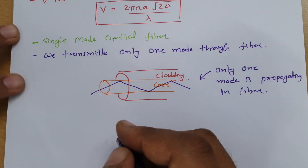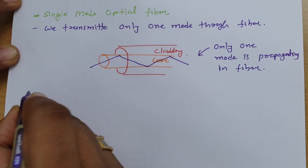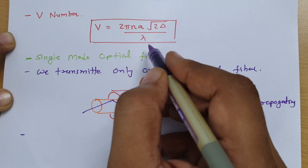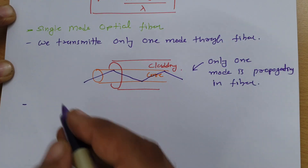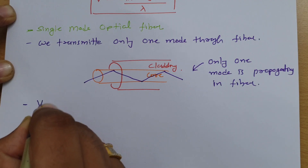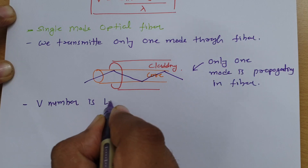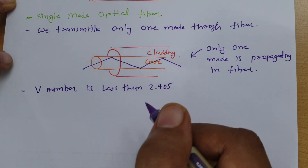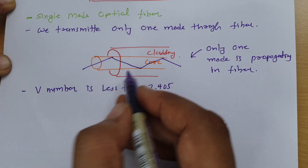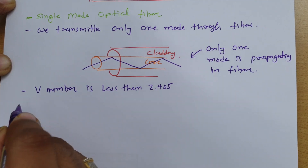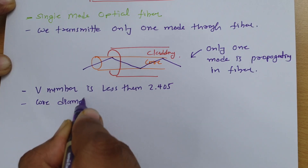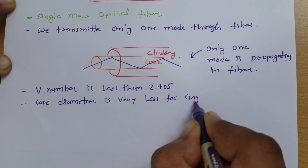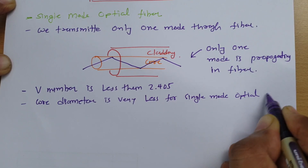There are a few things to focus on regarding single mode optical fiber. The V number should be less than 2.405 for single mode operation. Additionally, the core diameter for single mode fiber is very small.